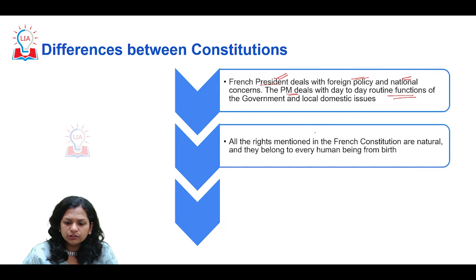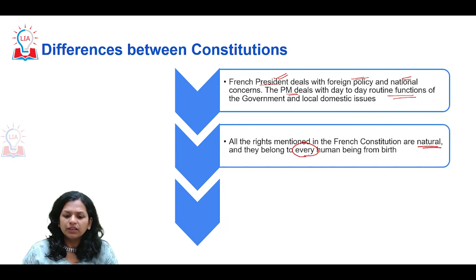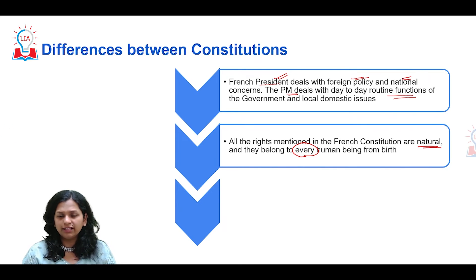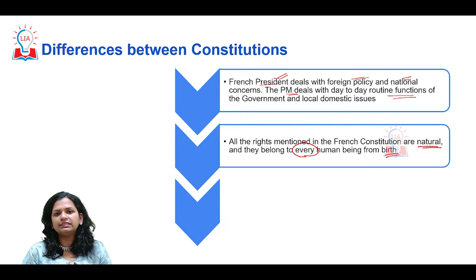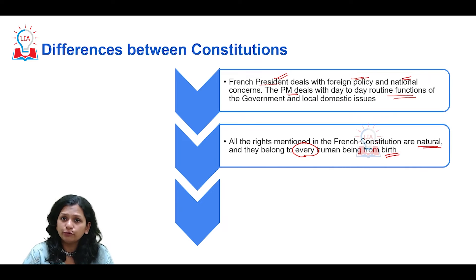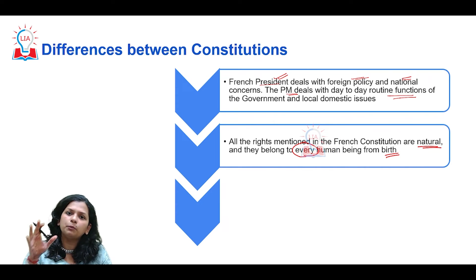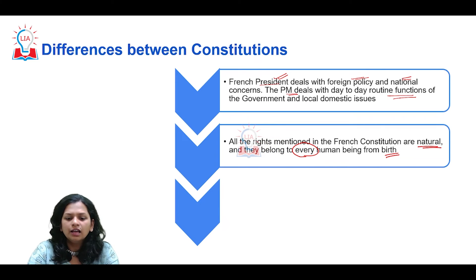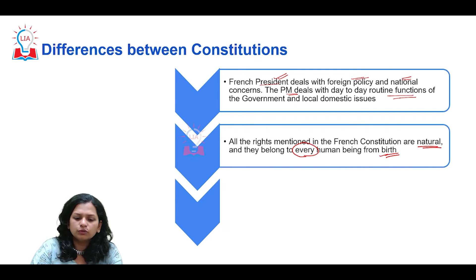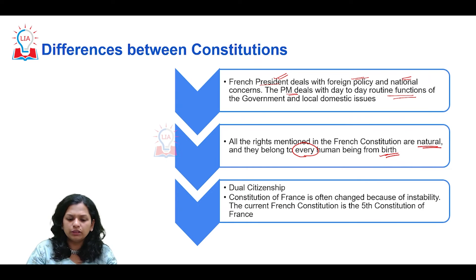The rights mentioned in the French constitution are natural rights that belong to every human being by birth. This is not the case with the Indian constitution, where some rights are given to citizens and some to people who acquire citizenship. The nature of the rights and to whom they are given differs significantly between the two constitutions.